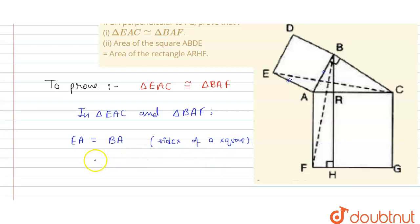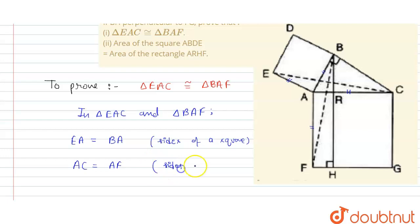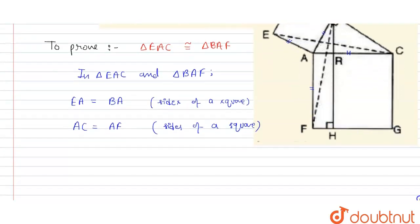The second condition is AC is equal to AF. AC is equal to AF for the same reason — because they are sides of a square.